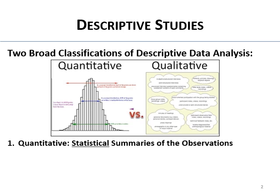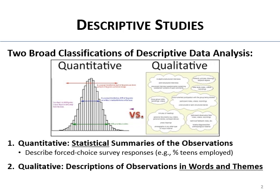Quantitative statistical analyses result in statistical summaries of the observations themselves — quantities like means and standard deviations. You might use them on a survey to describe forced-choice survey responses, such as the percent of teens who were employed. Qualitative descriptions, on the other hand, are observations in words and themes — when you do qualitative analysis you're looking for words and themes in the data.